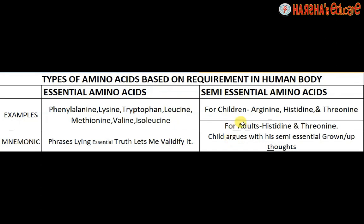'Child' refers to children, for whom the extra amino acid is Arginine. 'His' stands for Histidine and 'Th' stands for Threonine — these two surround the word 'semi-essential' in the sentence, and 'grown-up' means adults. So grown-ups need only Histidine and Threonine as semi-essential amino acids, while children also need Arginine along with Histidine and Threonine.